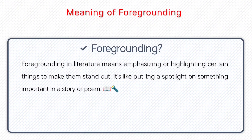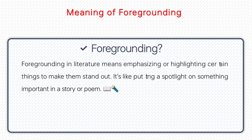First of all, an overview: what is foregrounding? Foregrounding means spotlight — to put something in the forefront. It means that any line, any word, any phrase, to show its importance — the technique we use is foregrounding. Foregrounding means forefront; it means emphasizing and highlighting certain things to make them stand out. It's like putting a spotlight on something important in a story or a poem. If there is any important thing, put light on it — this is foregrounding.